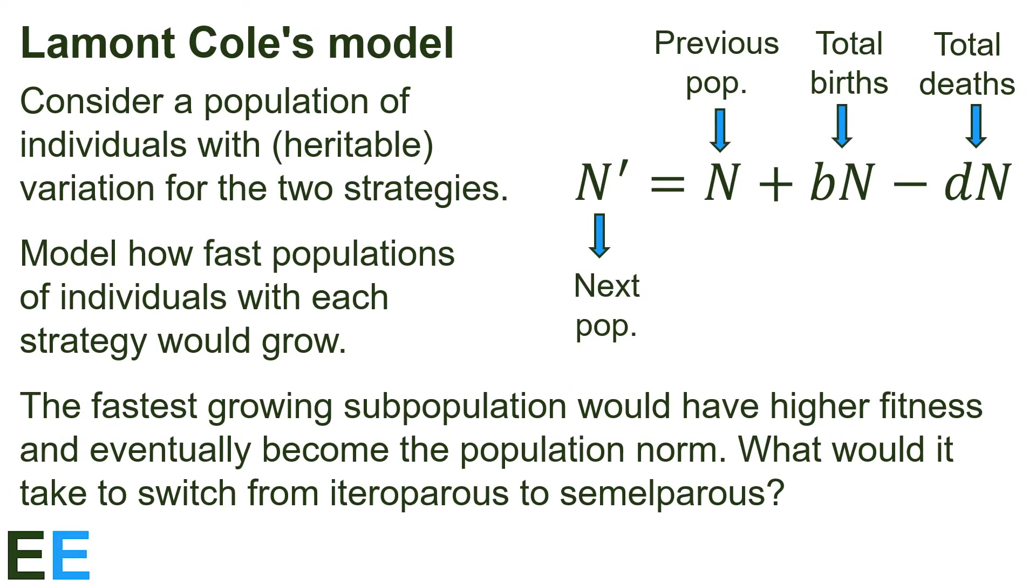The first mathematical model we'll look at is an influential one proposed by Lamont Cole. In this model, we consider a population of individuals with heritable variation for the two strategies. We'll model how fast a population of individuals with each strategy would grow using the equation shown.